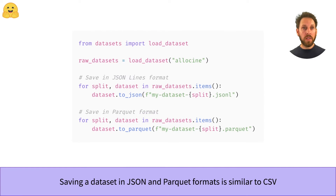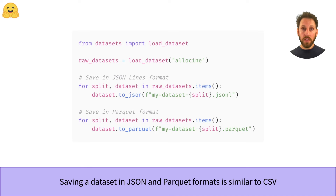Saving a dataset in the JSON or Parquet formats is very similar to the CSV case. We use either the to_json function for JSON files or the to_parquet function for Parquet ones. Just like the CSV case, we need to loop over the splits to save each one as an individual file.